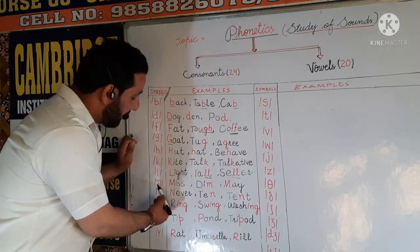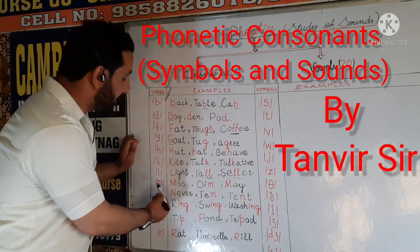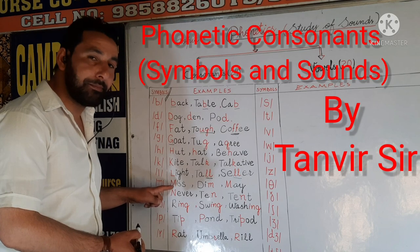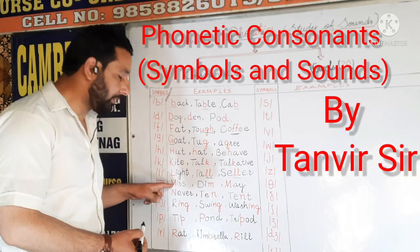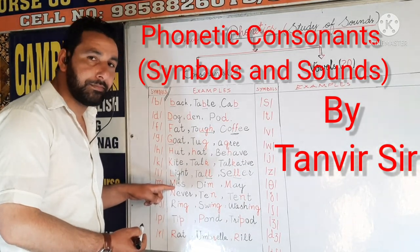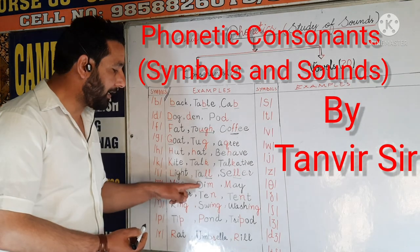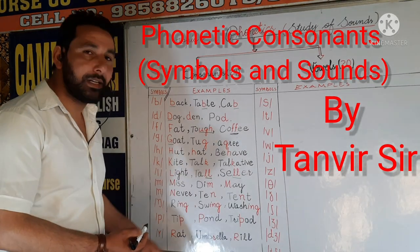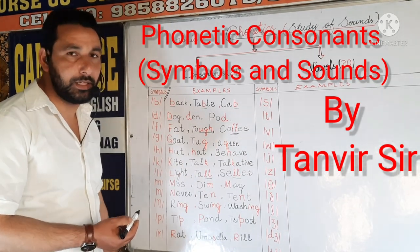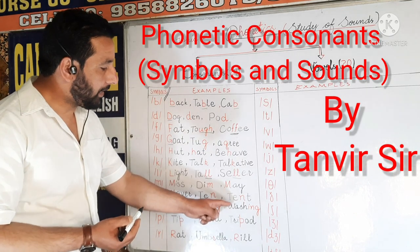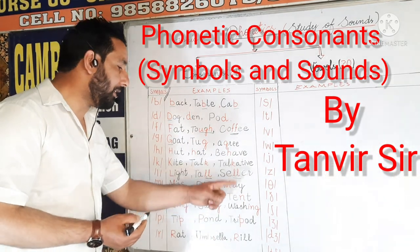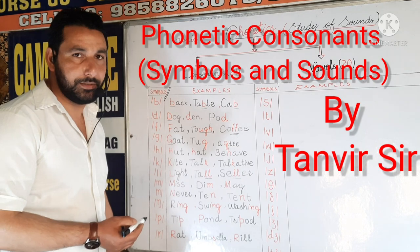Let's carry on. This is the symbol of sound M. As in case of 'miss', we start with M. And in case of 'dim', we end with sound M. In case of 'may', we again start with sound M.